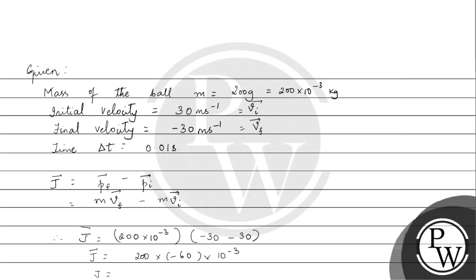So impulse comes out to be minus 12 newton second. The minus sign is essentially telling us that the impulse is in the opposite direction to the force. We will take the magnitude of impulse, which is 12 newton second.